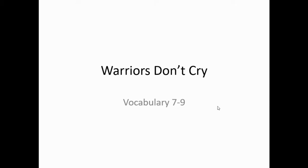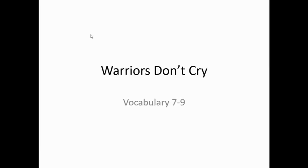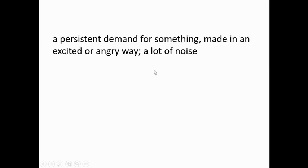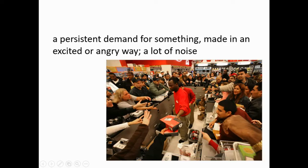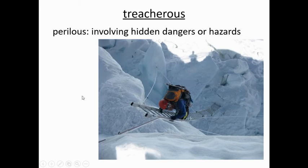Warriors Don't Cry vocabulary for chapters 7 through 9. Clamor: a persistent demand for something made in an excited or angry way; a lot of noise. Treacherous: perilous; involving hidden dangers or hazards. That looks very treacherous to me.